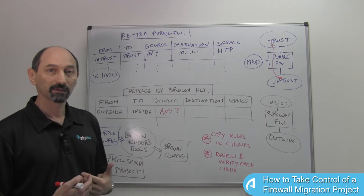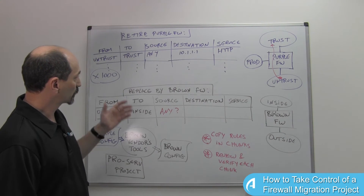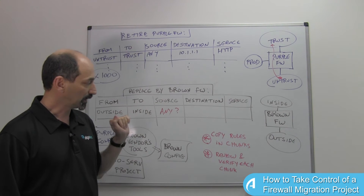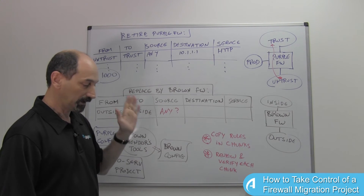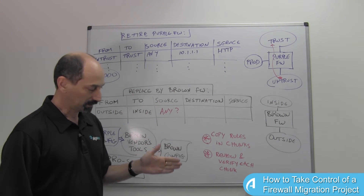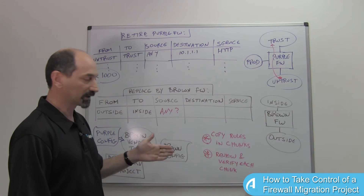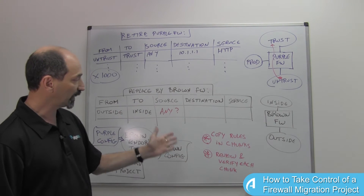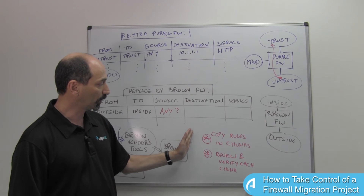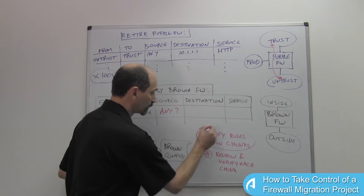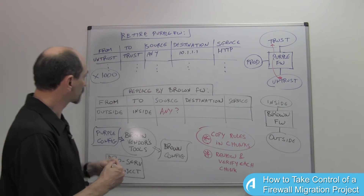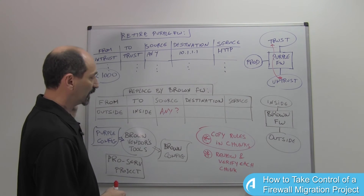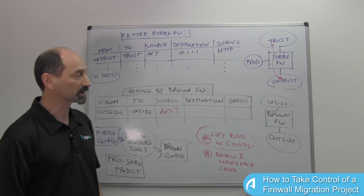What I think makes more sense is to realize that this is going to be a project that has multiple phases. And in each phase, you want to copy over a chunk of rules — not all of them. Don't take all 1,000 or 5,000 rules and assume that you can convert all of them at once.